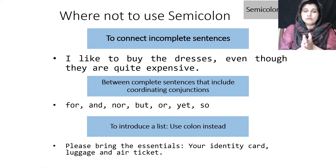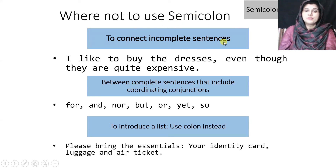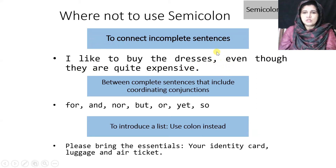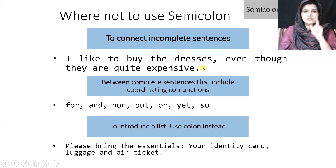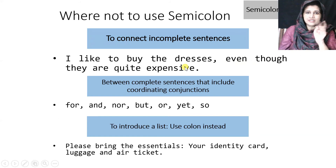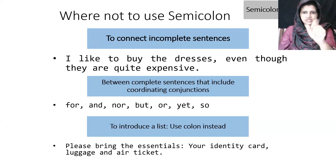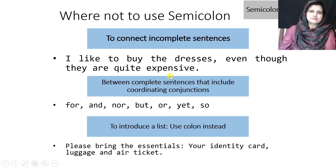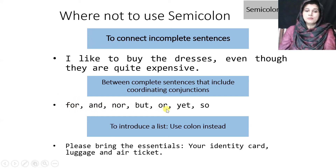Now, where NOT to use a semicolon. We cannot use a semicolon to connect an incomplete sentence to a complete one. For example: 'I like to buy the dresses, even though they are quite expensive.' Here the first part is an independent clause, but 'even though they are quite expensive' is a dependent clause — so we cannot use a semicolon. Also, do not use a semicolon between sentences that already include a coordinating conjunction (for, and, nor, but, or, yet, so — the FANBOYS), because the semicolon itself serves that function.